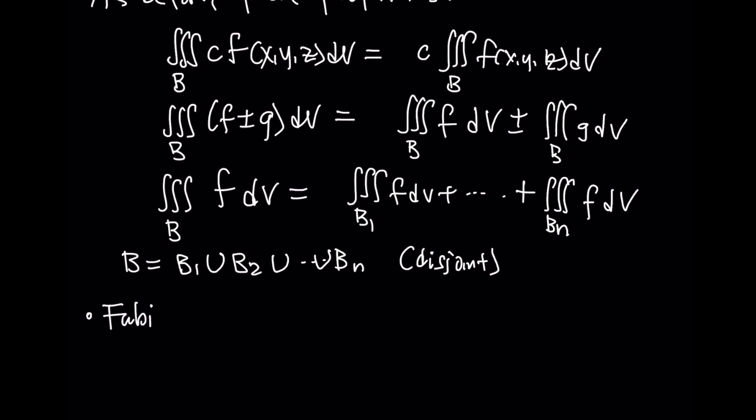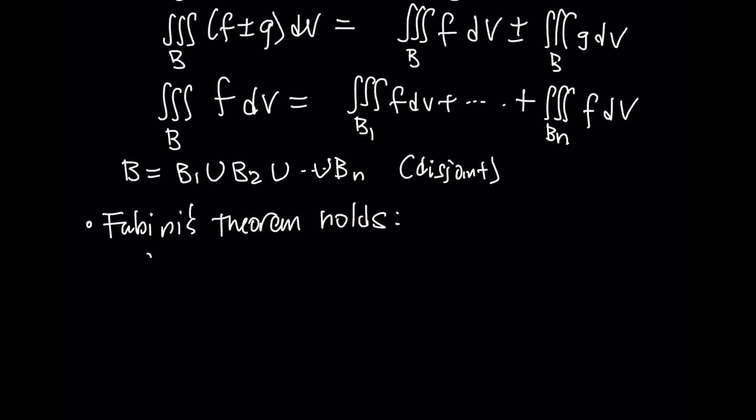Fubini's theorem also holds. In this case, what Fubini's theorem says is that we can evaluate a triple integral as a series of iterated integrals. So for example, we could integrate with respect to x first, then y, then z. Remember, we start inside and we work our way out.